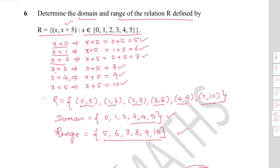Question 6: Determine the domain and range of the relation R defined by R = {(x, x+5) : x ∈ {0, 1, 2, 3, 4, 5}}. When x = 0, x+5 = 5. When x = 1, x+5 = 6.